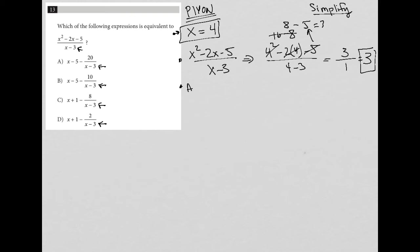So here's the answer choice A. Instead of x minus 5, I'd have 4 minus 5 minus 20 over, again, 4 minus 3. 4 minus 5 is just negative 1. 4 minus 3 is just positive 1. So, and 20 over 1 is just 20, so there's no need for that 1 down there. So I'd have negative 1 minus 20, which obviously does not equal positive 3. So A is out.